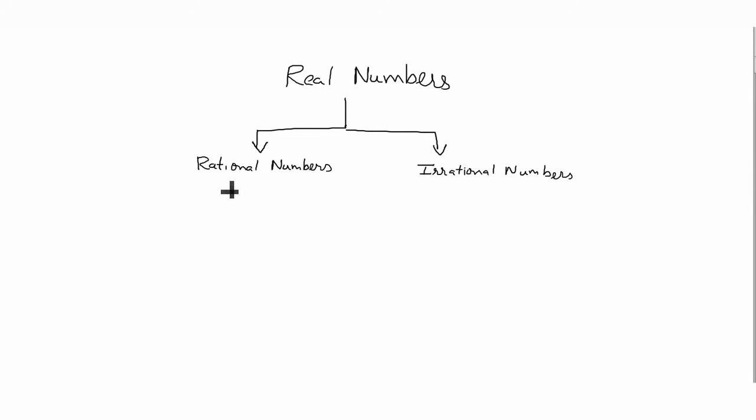Rational numbers consist of, as we have seen in previous videos, natural numbers, whole numbers, integers - you also know natural number is a subset of whole number which is a subset of integers - and the fourth type is decimals.